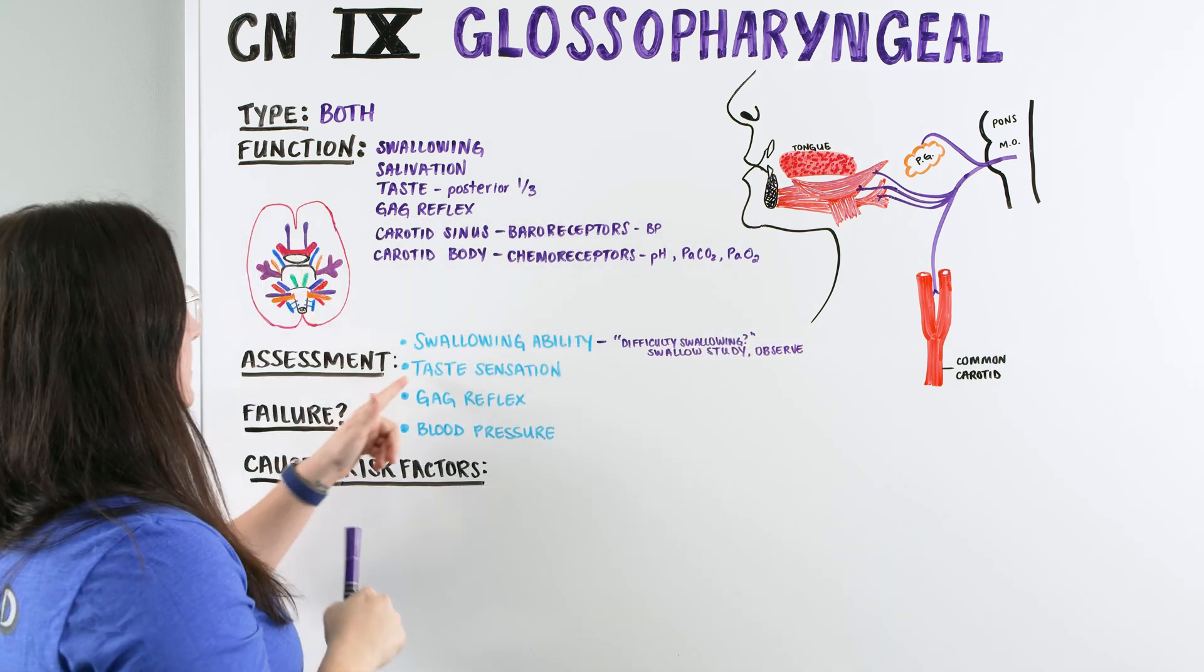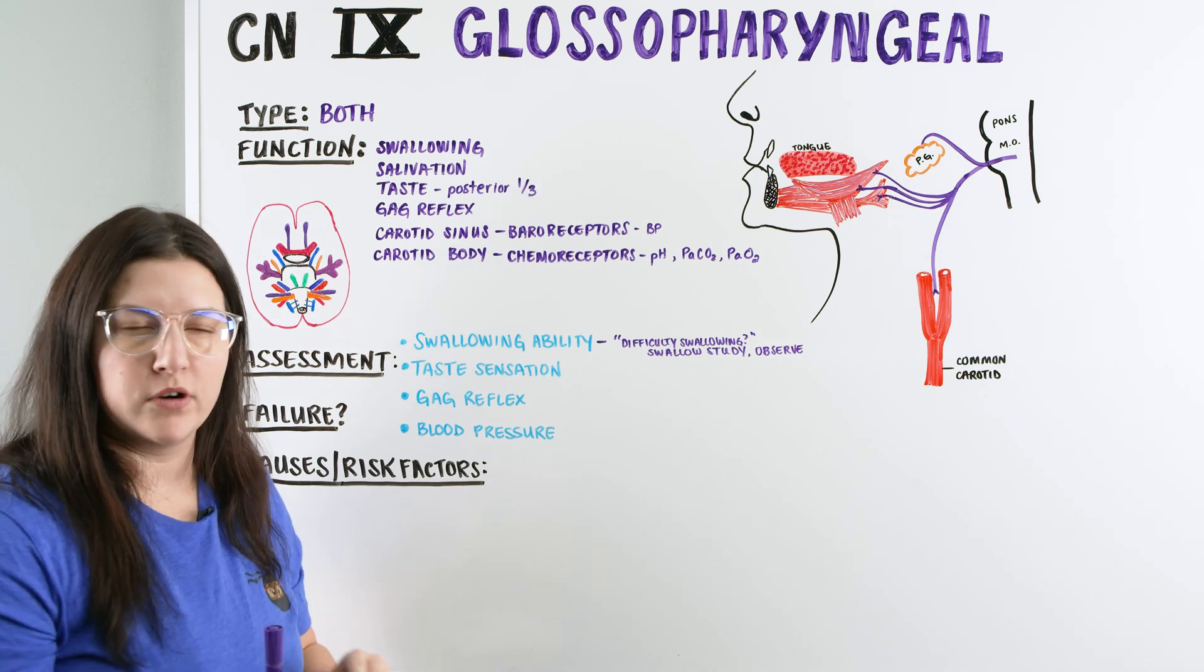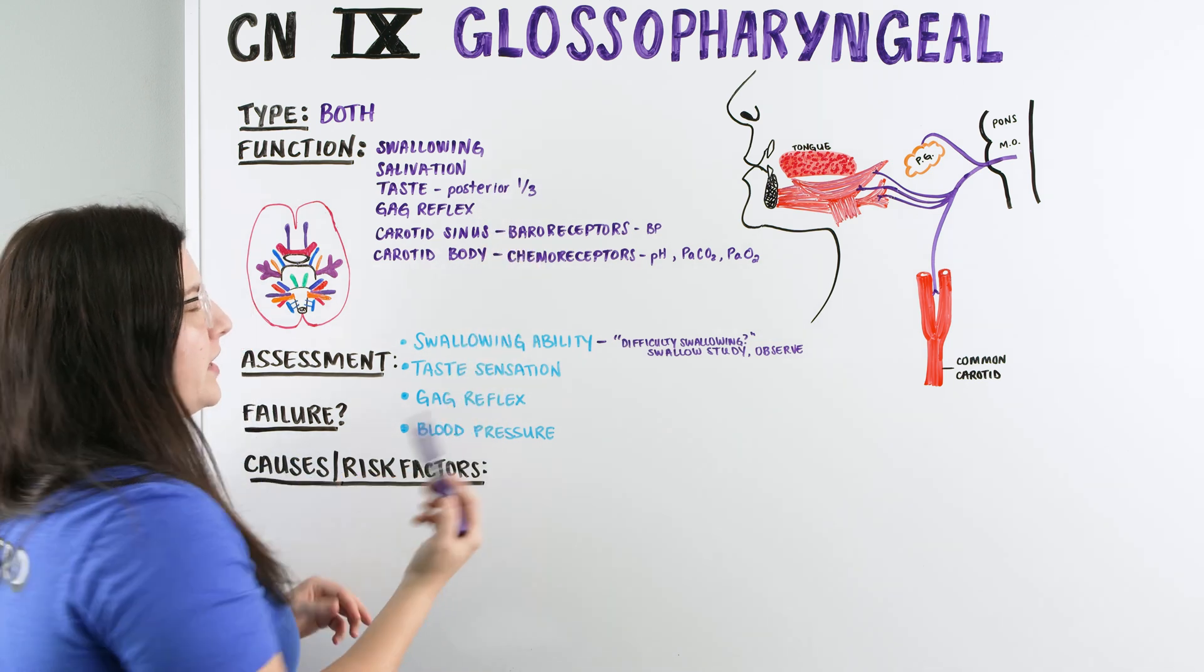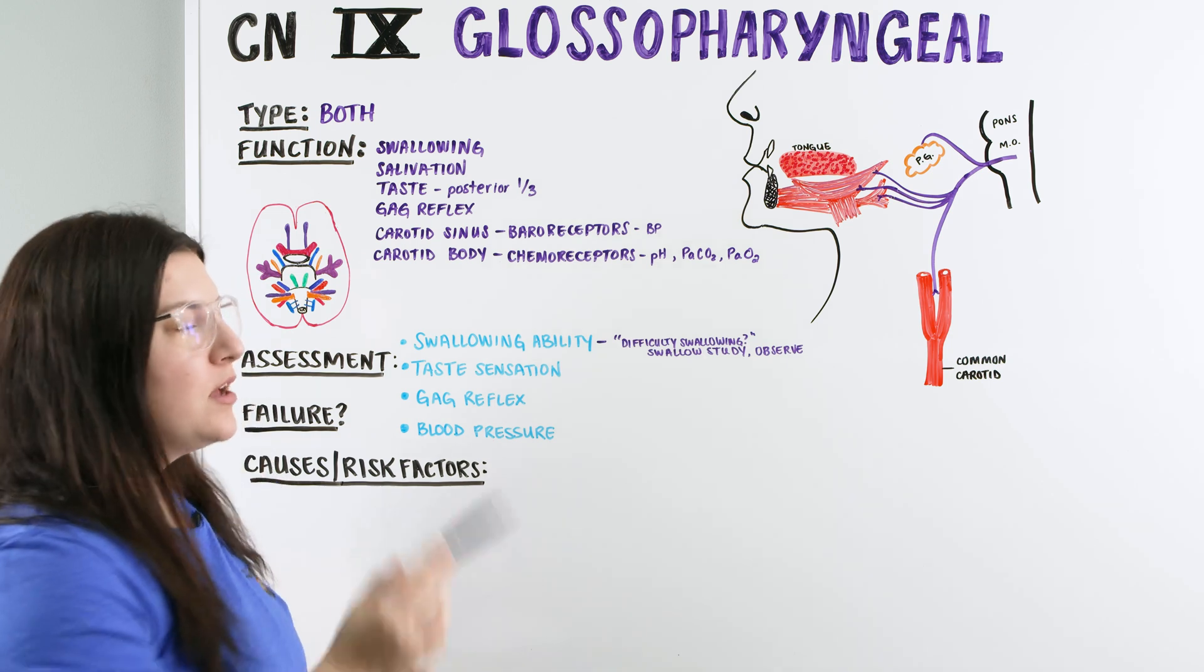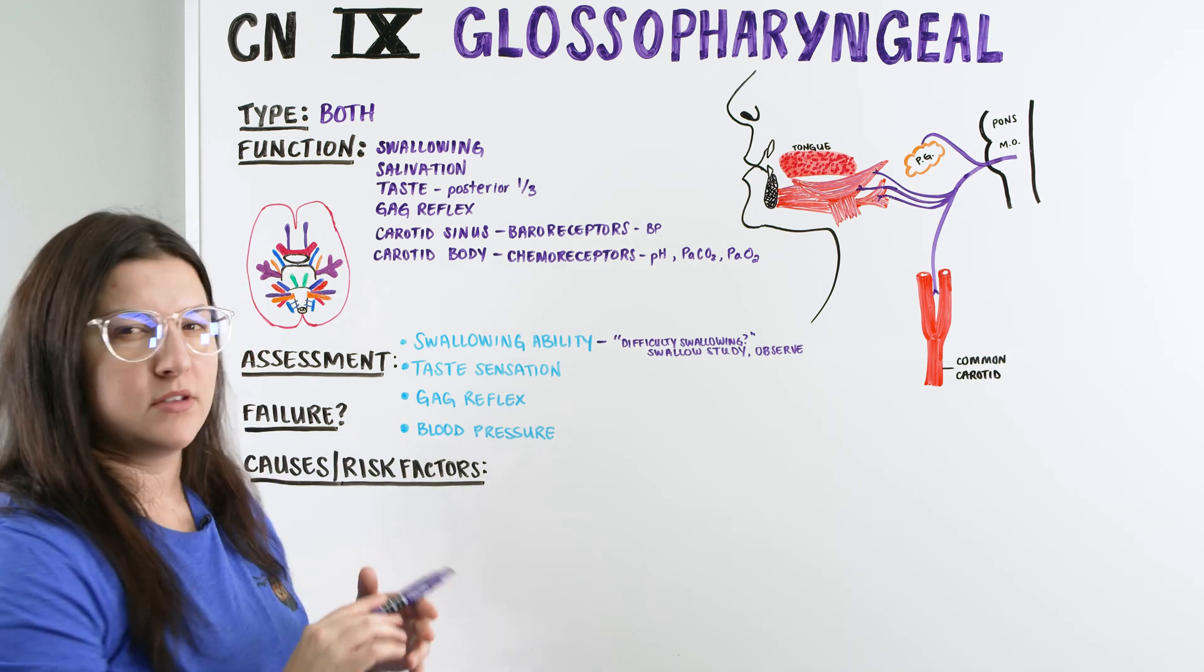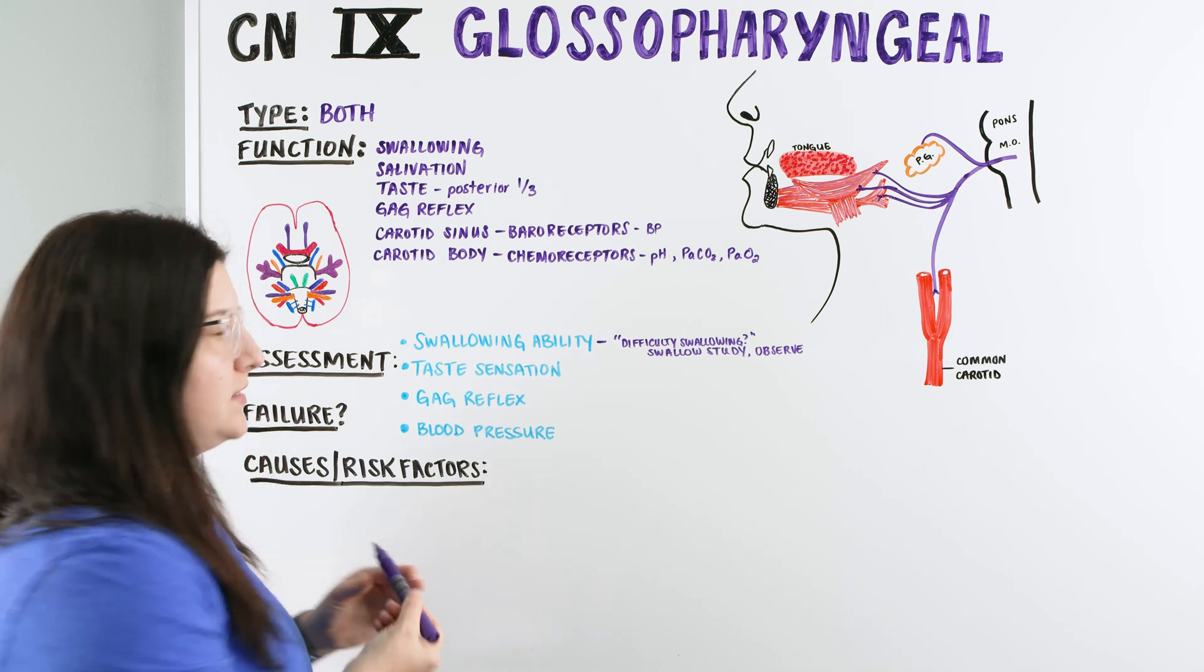The next thing we can do is the taste sensation, just like we've done with other nerves. This is going to be the posterior one-third. It has to do with more sour, bitter tastes, but you can take a little bit of something sweet or something sour, put that on the back of the tongue, and see if they can taste it.